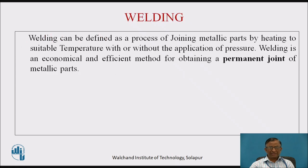Welding is a process of joining metallic parts by heating to a suitable temperature with or without the application of pressure. Welding is a very economical and efficient method for obtaining a permanent joint of metallic parts. The other method to obtain a permanent joint is a riveted joint, but that is more cumbersome. So welding is the most economical and efficient method for obtaining a permanent joint.